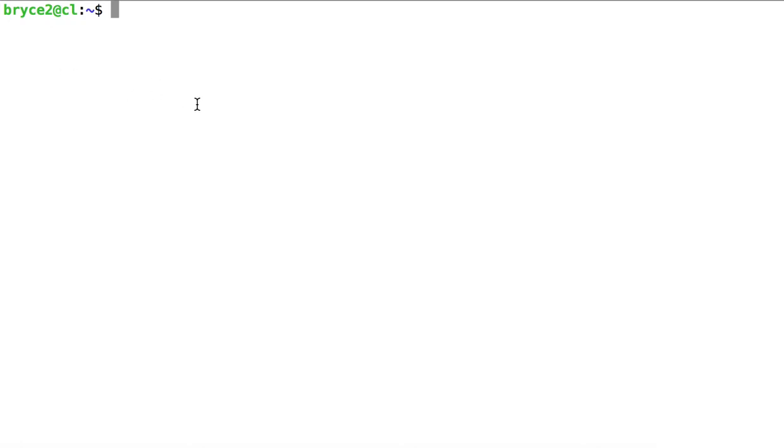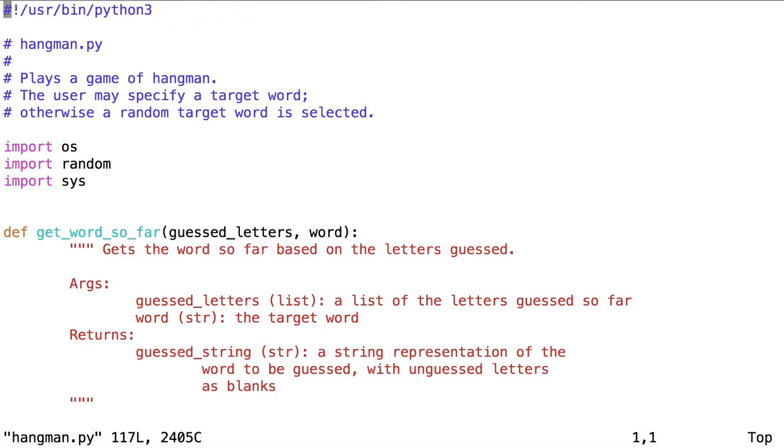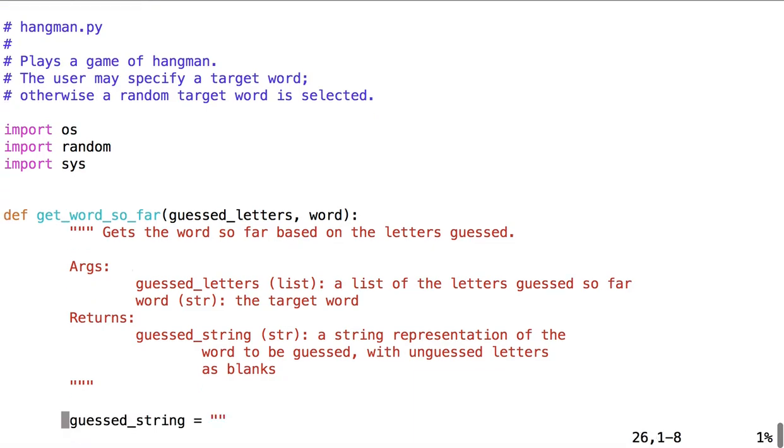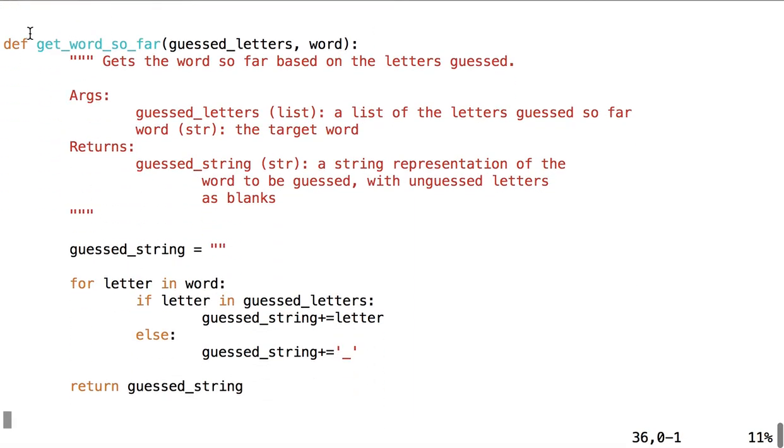Let's take a look at hangman.py, and in particular, how it uses strings and lists in its implementation. You'll see that it uses two functions. GetWordsSoFar, which takes guessed letters and word as its parameters, guessed letters being a list, and word being a string.